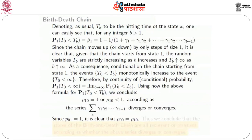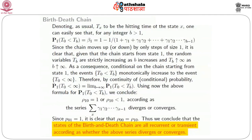Since starting from 0 you always go to 1 with probability 1, ρ_{00} = ρ_{10}. Therefore state 0 — and consequently all states of the birth and death chain — are recurrent or transient according as the series Σ γ_1·γ_2·...·γ_{x−1} diverges or converges. So given the θ_x's for the chain, compute the ratios γ_x = (1−θ_x)/θ_x and examine whether this series diverges or converges to determine whether the chain has all states recurrent or all states transient.